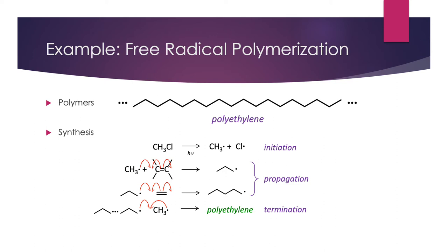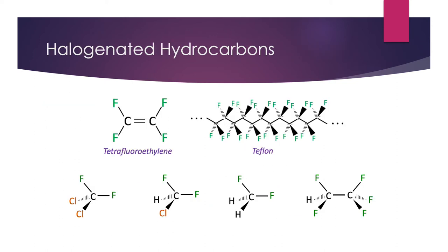This is a very successful way of making long-chain polymers, and you can make all kinds of plastics using this free radical technique. A very similar process can be used to produce polytetrafluoroethylene, also known as Teflon. Teflon is a nonstick surface. Those carbon-fluorine bonds are all very strong and very polar, so each fluorine has slightly higher electron density, preventing other reactants from getting close and making the carbon-fluorine bond hard to break. This makes Teflon a very useful substance, especially in cooking when you don't want food sticking to your pots and pans.